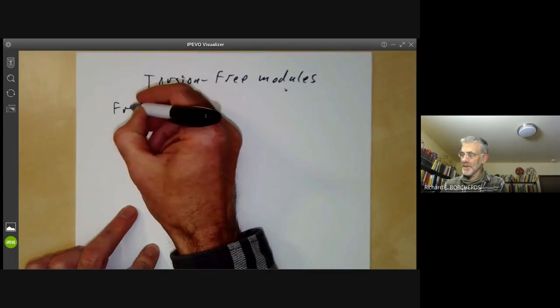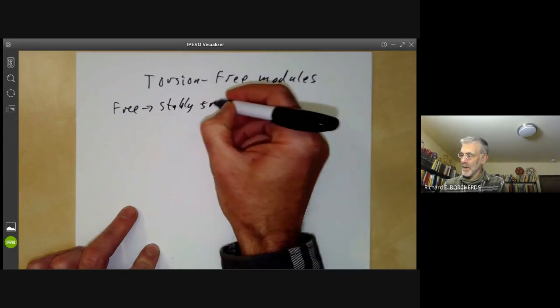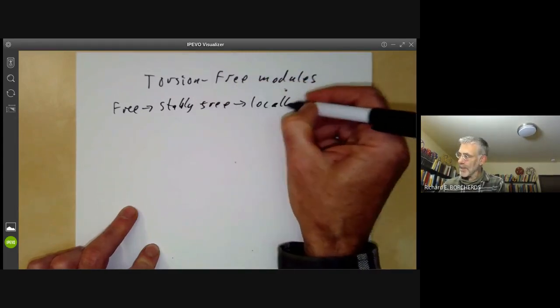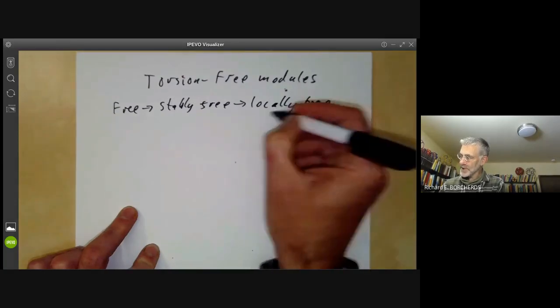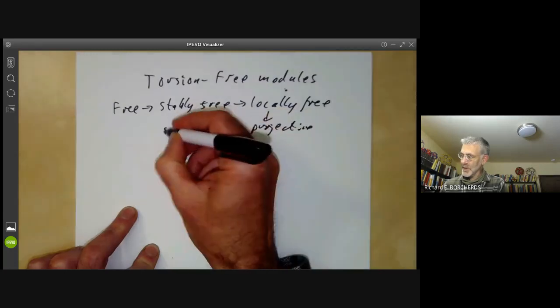We've defined these different sorts of modules: free, which implies stably free, which implies locally free, which implies projective, which implies stalkwise free.